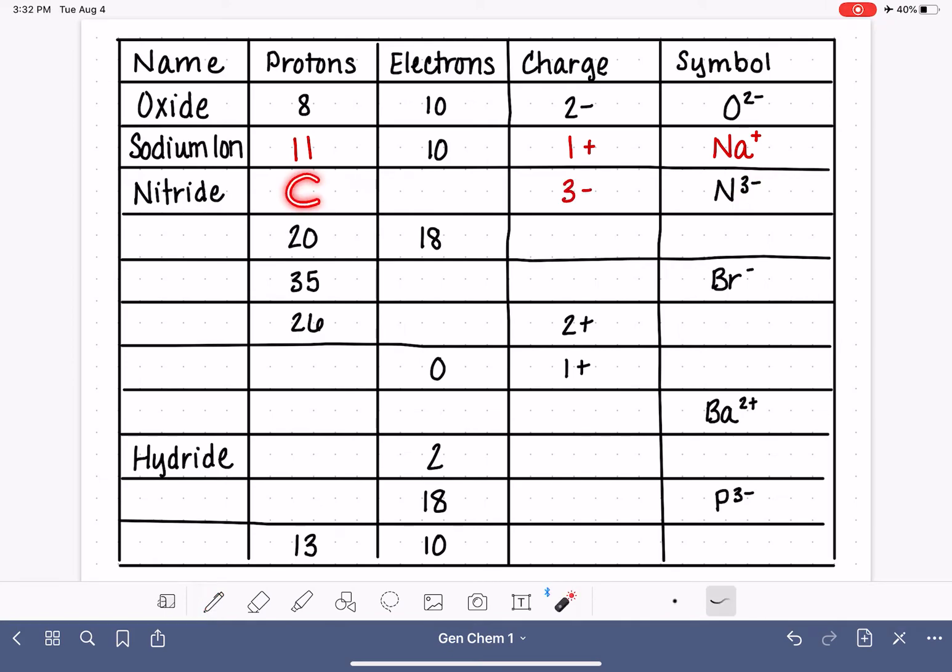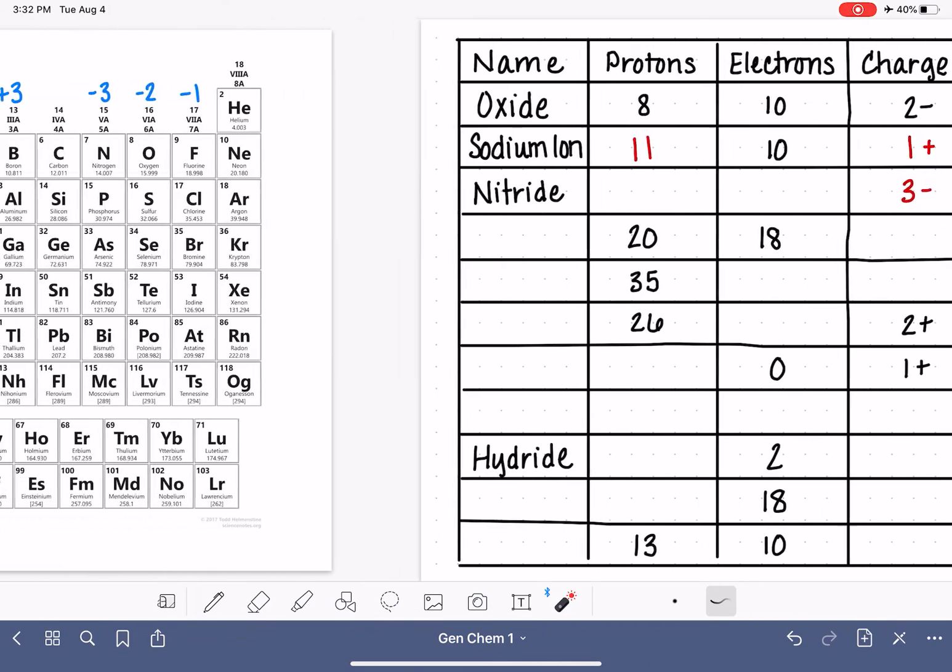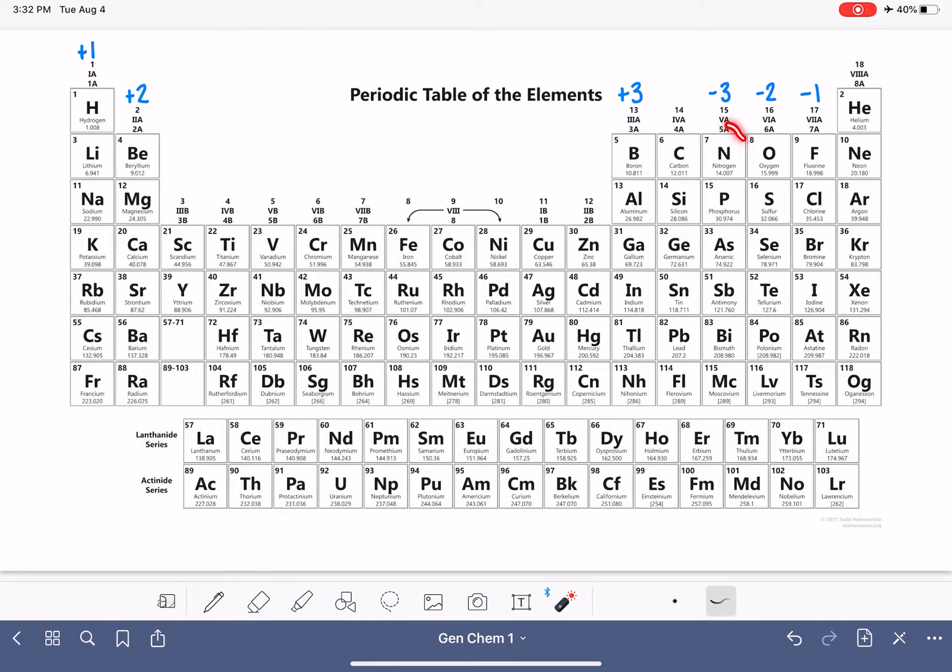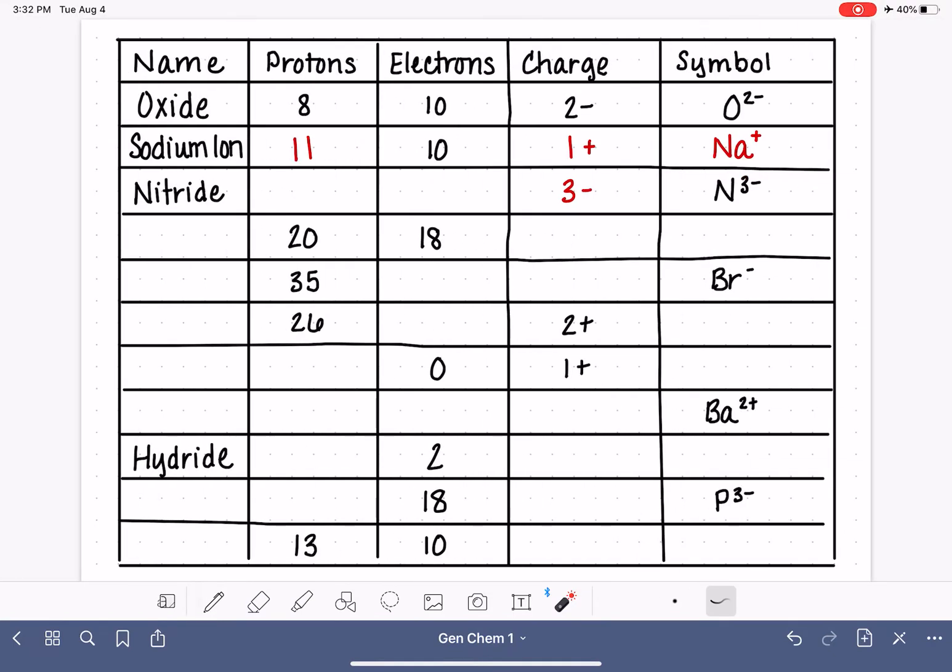To determine the number of protons and electrons, we're going to start with protons. We're going to go to the periodic table, find nitrogen. Nitrogen is located here. Its atomic number is 7, which means it has 7 protons.